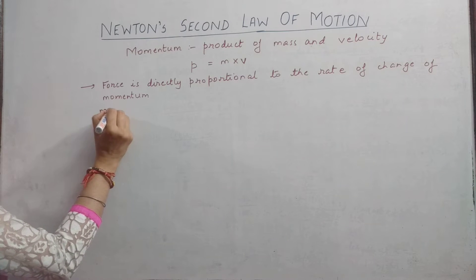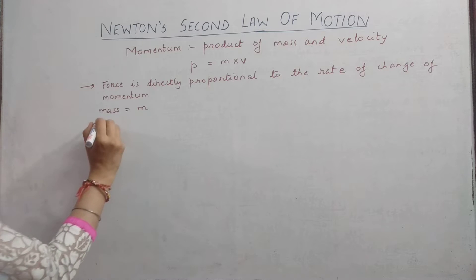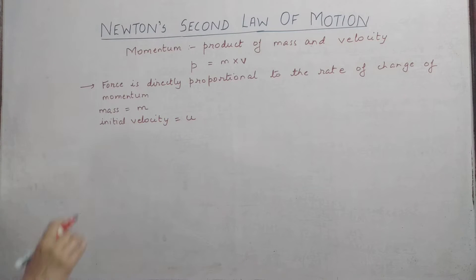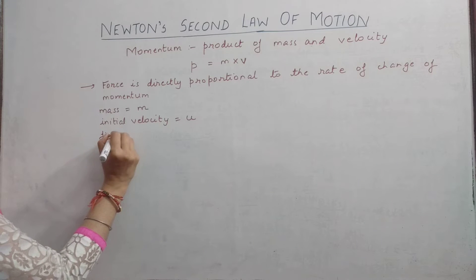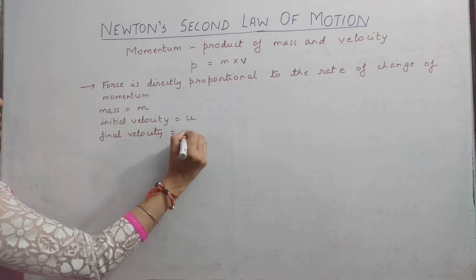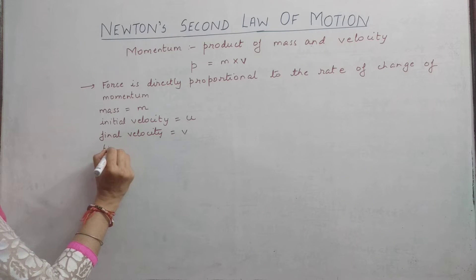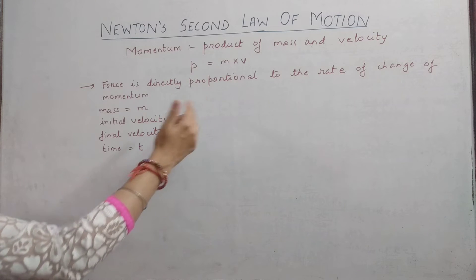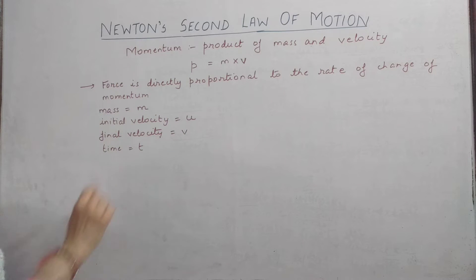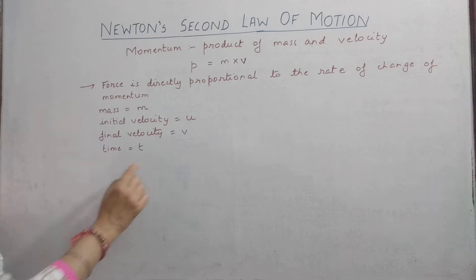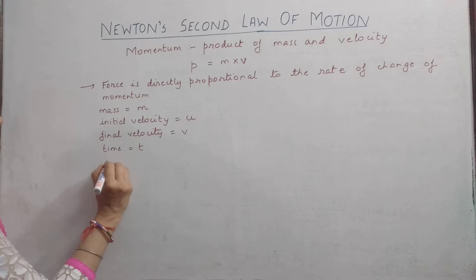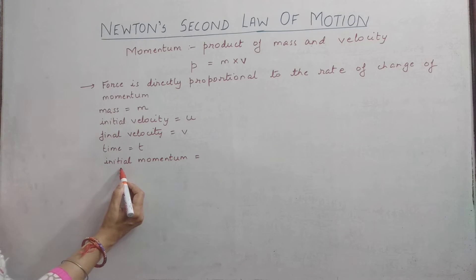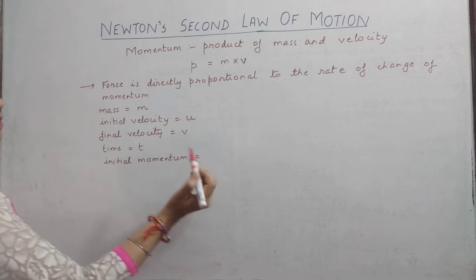Suppose we have an object whose mass is M and it is moving with an initial velocity U. With time, the velocity changes to a final velocity V, and this change takes place in time T. From this, if the initial momentum is P1, it will be mass into initial velocity, that is MU.